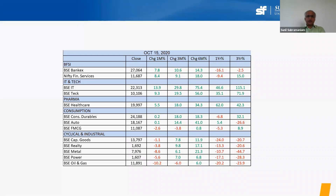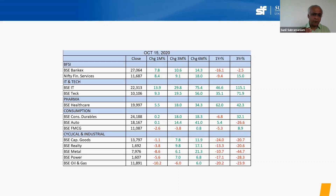Let's start by looking at sectoral performance in the stock market. This data is as of two days ago. I've listed 13 sectors with their closing values for BSE sectoral indices, along with one-month, three-month, six-month, one-year, and three-year returns. As you can see, the top appears green for positive returns and the bottom red for negative — there is sharp polarization across sectors and across time frames.